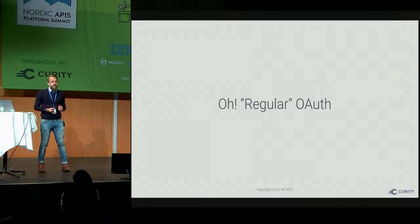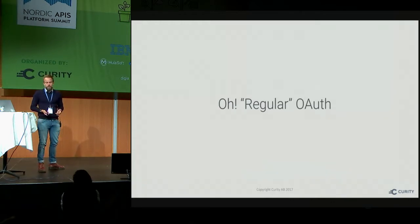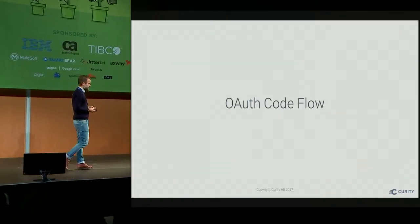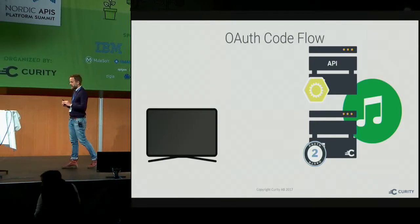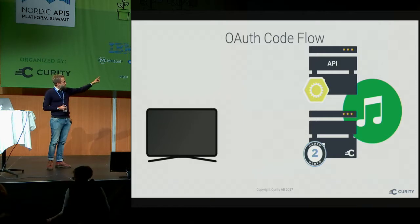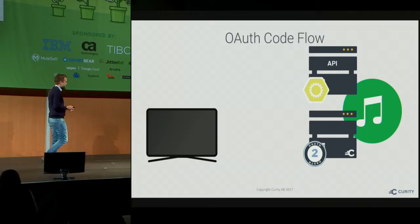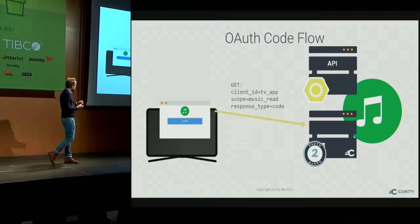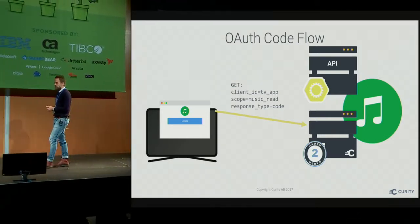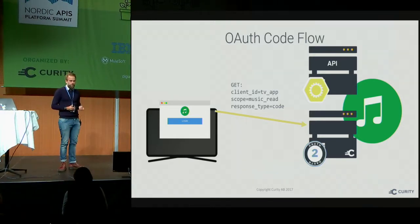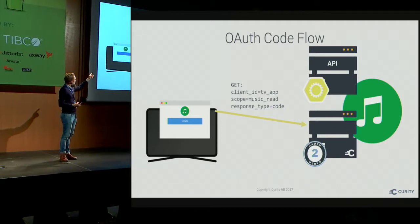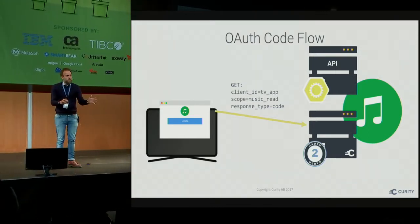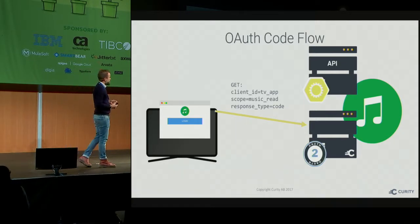So you might think: why don't we just use regular OAuth? With regular OAuth, what we really mean is the OAuth authorization code flow — the most common OAuth flow. Same setup: we have a TV, an OAuth server, and an API. For the code flow, the TV is a smart TV that can have a browser. What happens is you pop up a browser and navigate to the authorization endpoint with parameters: client_id equals TV app, scope equals music:read, and response_type equals code — which switches us into the code flow.